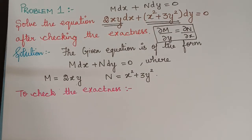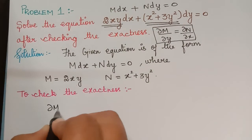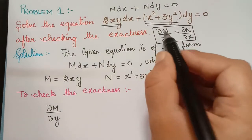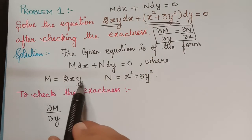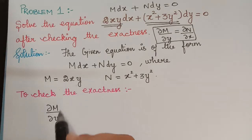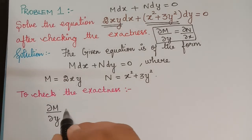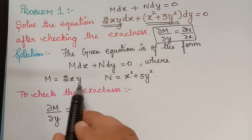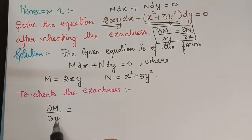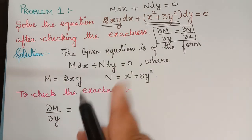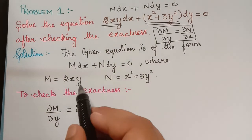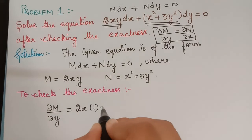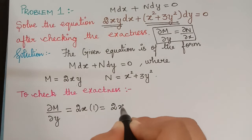The first step is to find ∂M/∂y. Here M equals 2xy, and we differentiate M partially with respect to y, treating x as a constant. Since 2x is a constant, the differentiation of y is 1, so ∂M/∂y equals 2x.